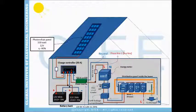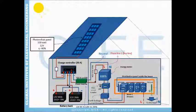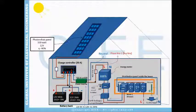This is the energy meter — it counts how much energy we consume. This is the main circuit breaker, and this is the earth leakage circuit breaker. The earth leakage circuit breaker will detect any leakage current — if there is any leakage current, this breaker will detect it and then cut off the system.